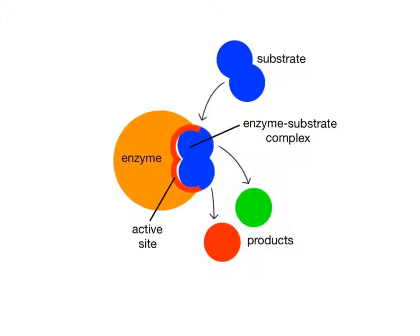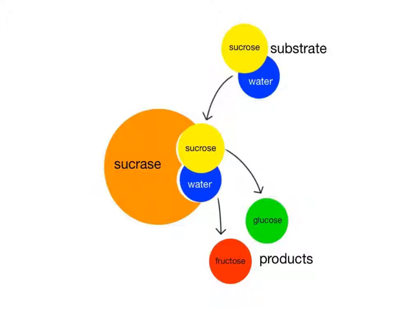Enzymes catalyze reactions by first making contact with their substrate or substrates at the enzyme's active site, forming a temporary compound called the enzyme-substrate complex. In this example, sucrase is the enzyme, and the disaccharide sucrose and water are the two substrates.